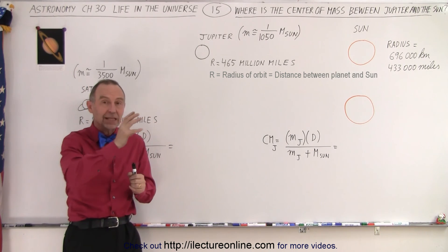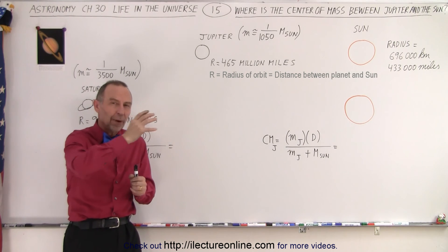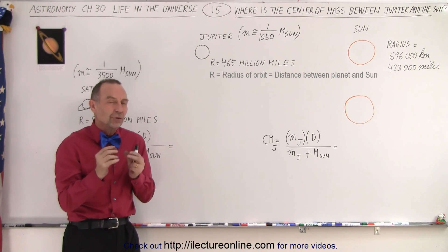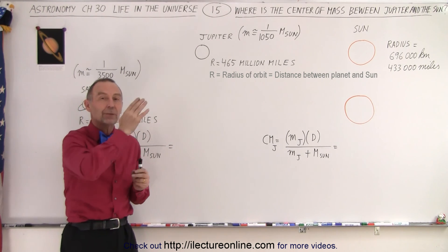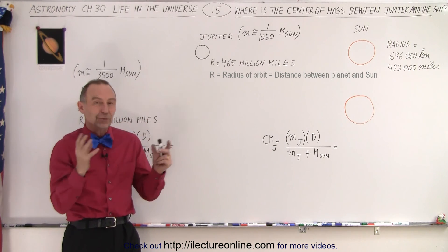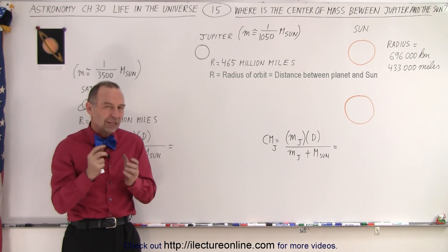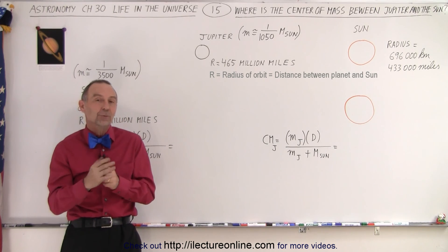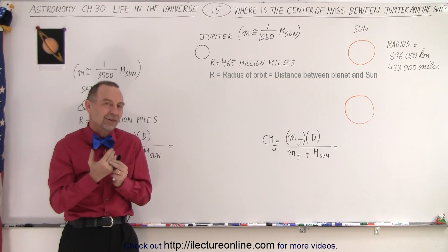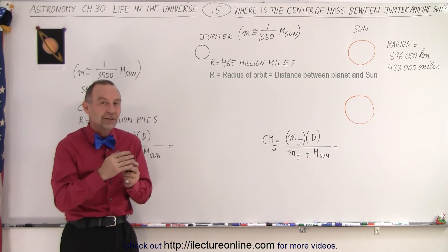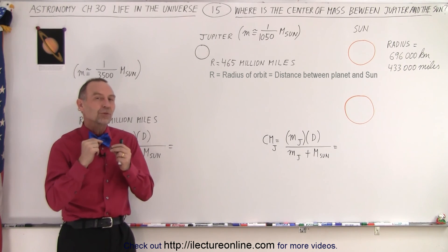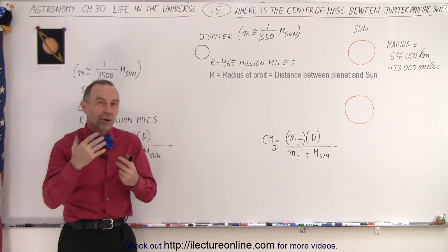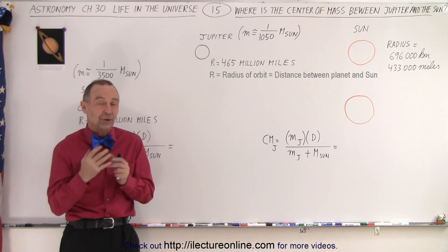It turns out the Sun will actually make little circles around a common barycenter, a common center of mass between the planets of Jupiter and Saturn combined. So to give you a feel of how much an effect that has, we're first going to calculate the center mass between Jupiter and the Sun, and the center mass between Saturn and the Sun. And then in the next video, we will see how that affects how the Sun acts in our solar system.